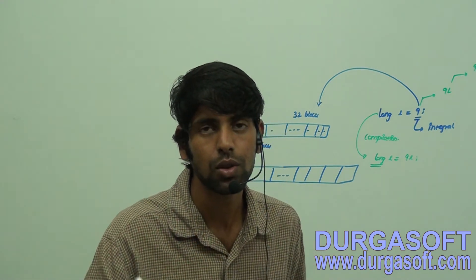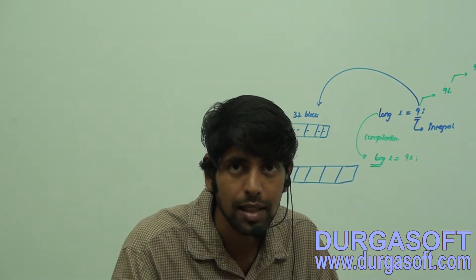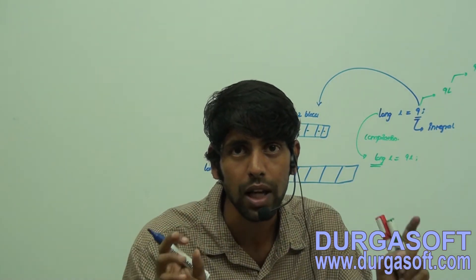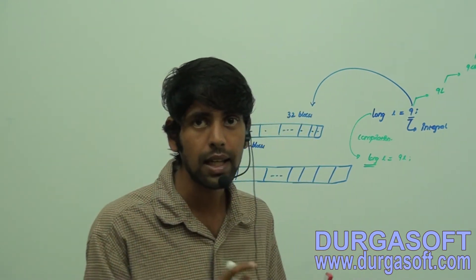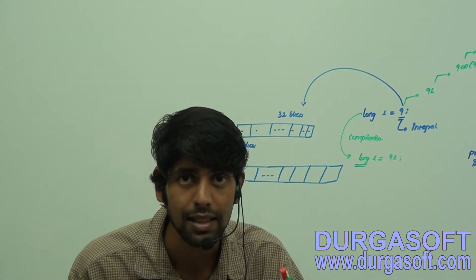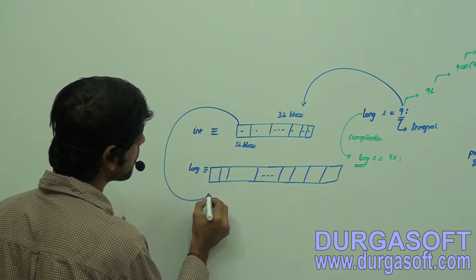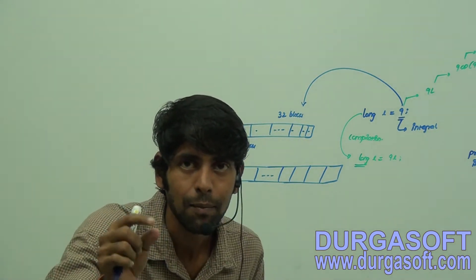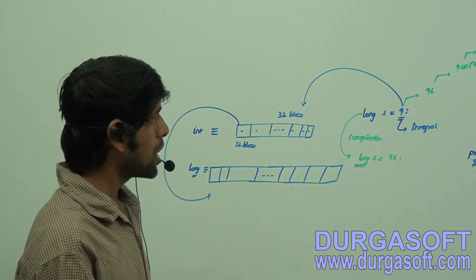Memory representation is fundamental — no program makes sense without it. When they develop compilers, JVMs, or programming languages, they think in terms of memory and performance. If you are good in data structures and algorithms, you can even develop compilers. So here, copying this 32-bit data to 64 blocks means the type changes but the data remains the same.